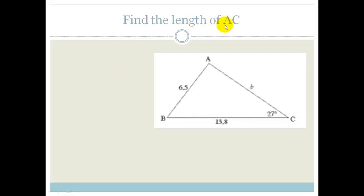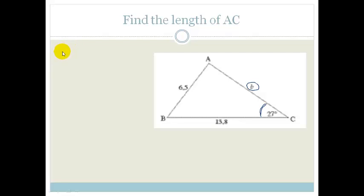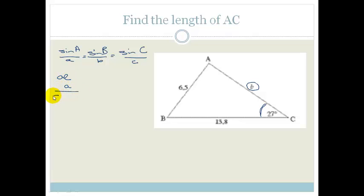The first question says find the length of AC. We've been given triangle ABC where the length of AB is 6.5, the length of BC is 13.8, and we have the size of angle C — we want little b. The sine rule says sin A over A equals sin B over B equals sin C over C, or flipped: A over sin A equals B over sin B equals C over sin C.